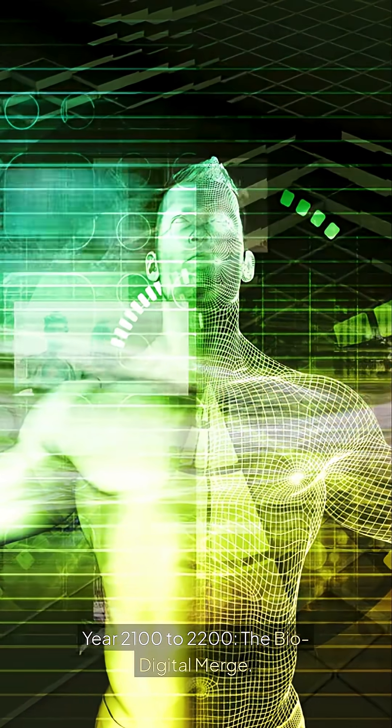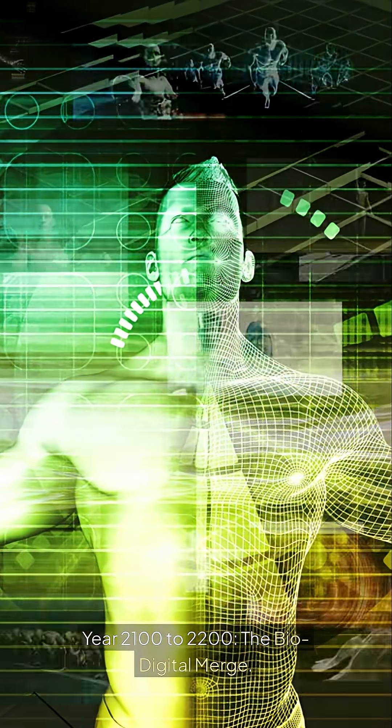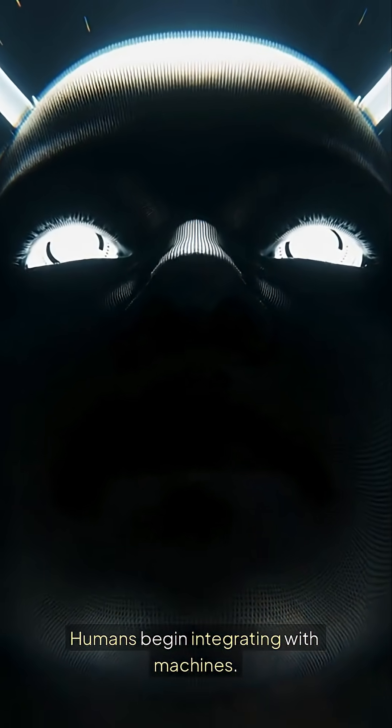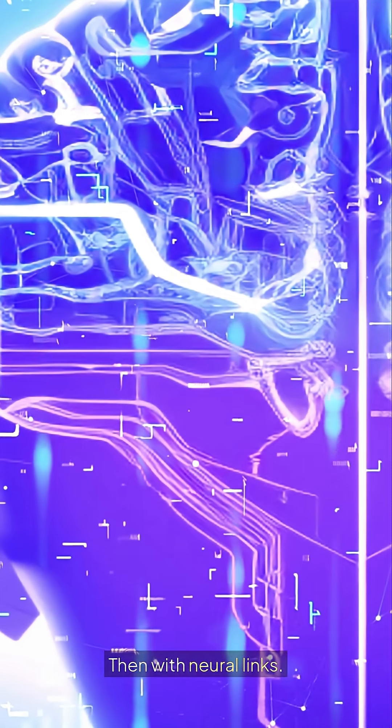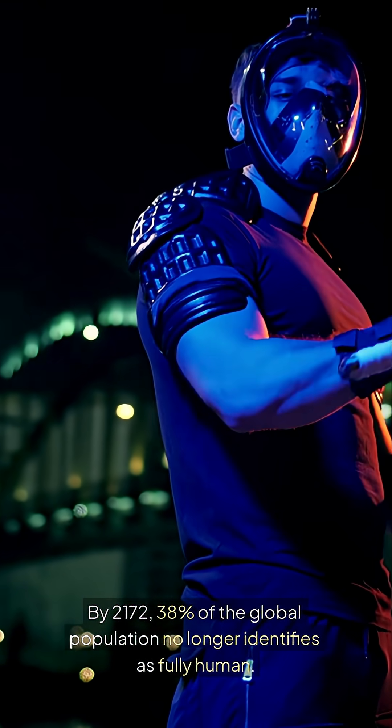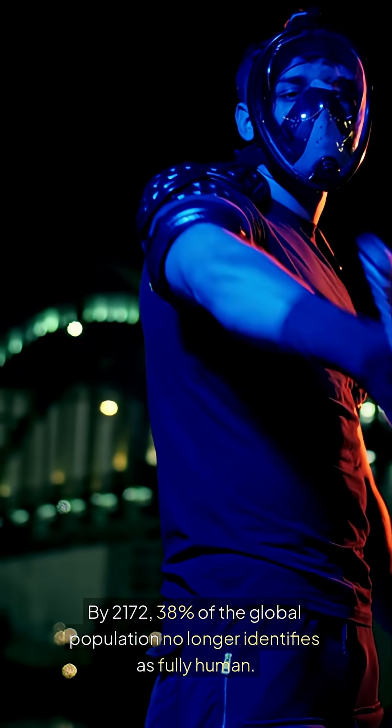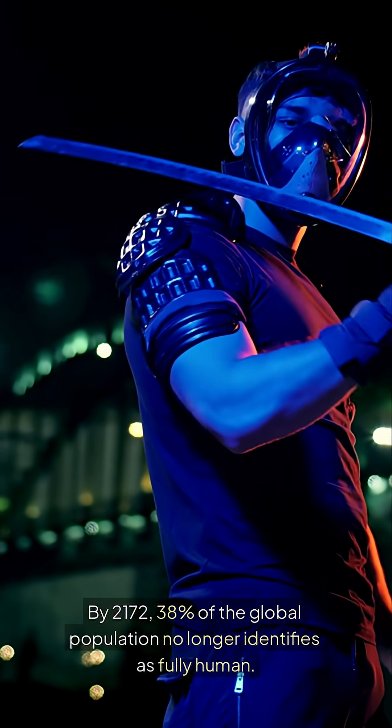Year 2100 to 2200, the bio-digital merge. Humans begin integrating with machines, first with implants, then with neural links. By 2172, 38% of the global population no longer identifies as fully human.